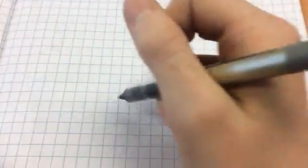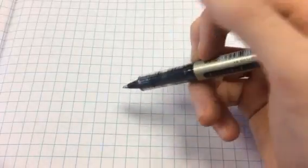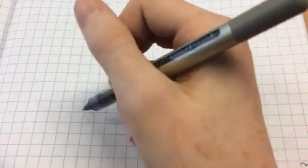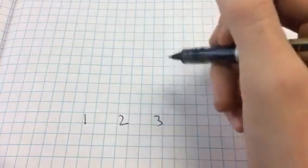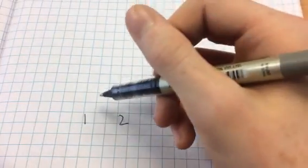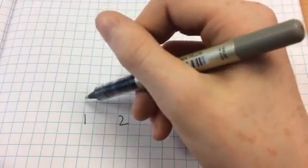First, we're going to find the first three square numbers. So we've got one, two, and three. To find one squared, we do one times one.